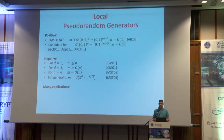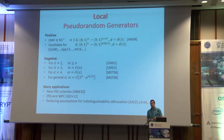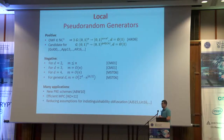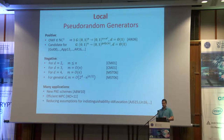This primitive has tons of applications. Here are just three: one application is a very efficient construction of public-key encryption schemes — that's Applebaum and Dal in 2010. Later, local PRGs were also used to construct efficient MPC protocols. And most relevant to this work is the recent line of work constructing indistinguishability obfuscation from this primitive.